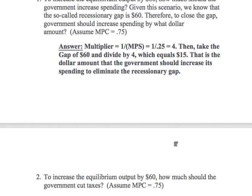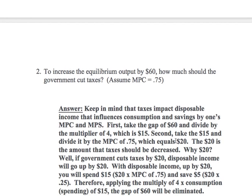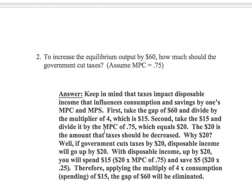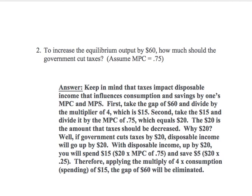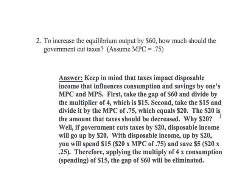Now let's go on to the second situation — the tax scenario, which is a little bit more complicated, but not that much more difficult. I still need to increase equilibrium output by 60, but this time I'm dealing with taxes. Keep in mind that taxes impact disposable income, which influences consumption and savings by one's MPC and MPS.